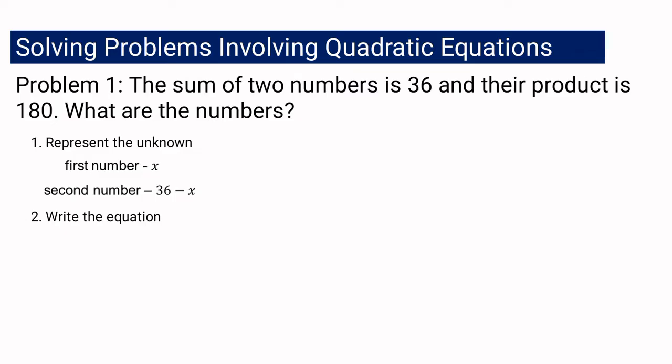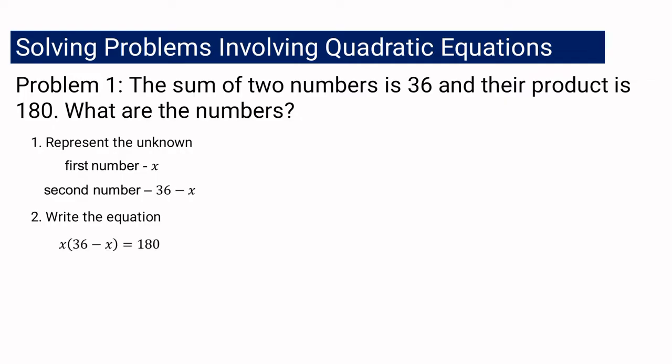The second step is you need to write the equation, basing it on the problem itself. The problem says the product of the two numbers is 180, so you are going to multiply the first number and the second number. The equation becomes x multiplied by (36 minus x) equals 180. That is our equation based on the given problem.